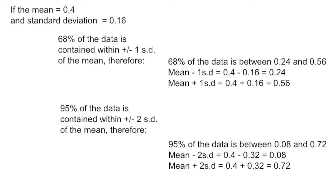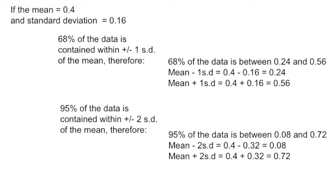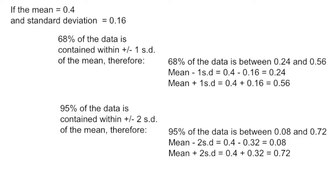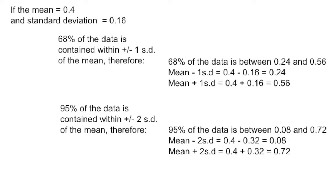So since two standard deviations, 2 times 0.16 is 0.32, we add and we subtract that and we find that 95% of the data is contained between 0.08 and 0.72.